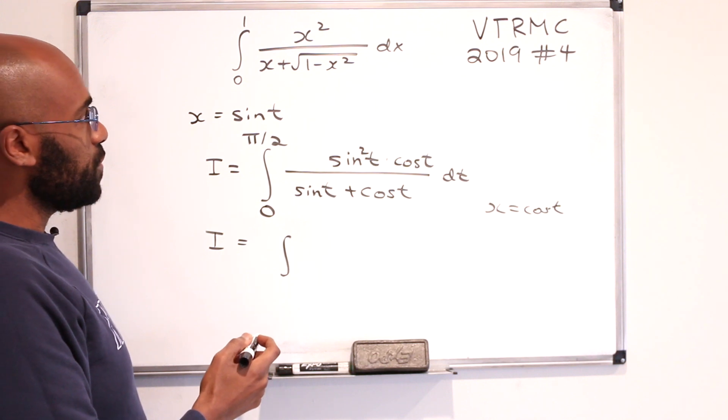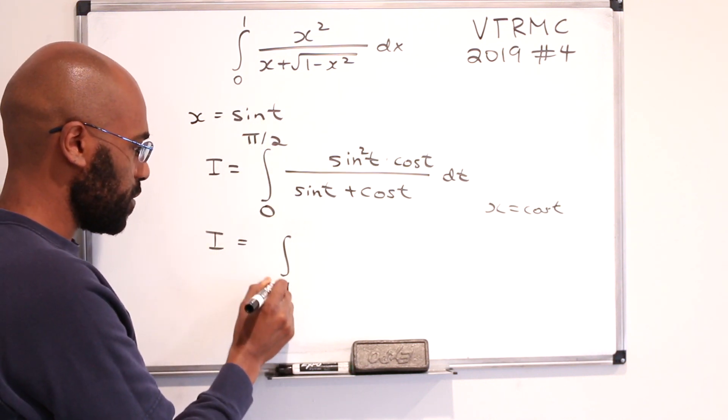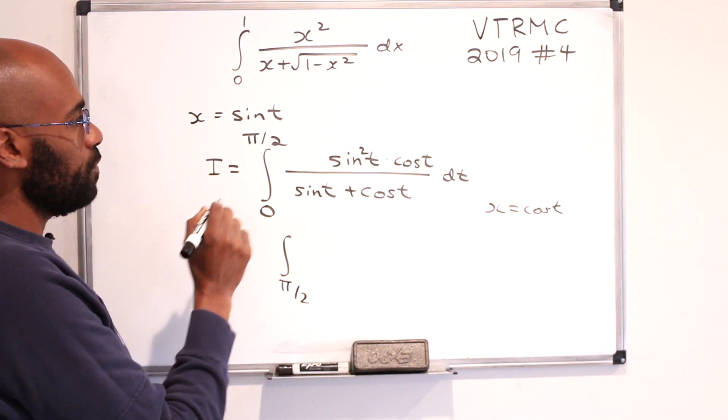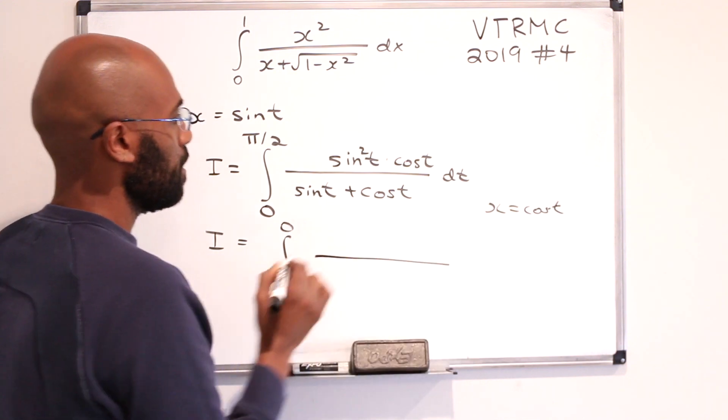Okay, so if we do that, when x is zero, we'll have pi over two over here. And when x is one, we have zero over here.